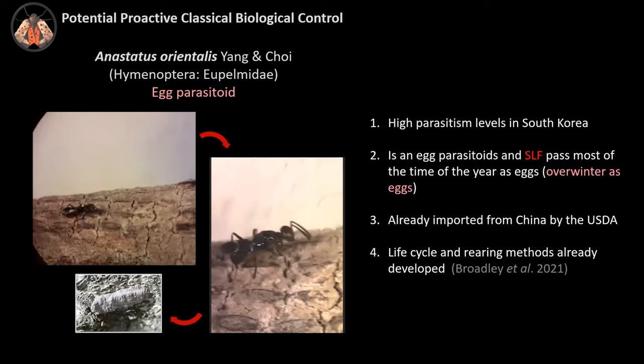A third reason is that this parasitoid was already imported from China by the USDA to test it as a biocontrol agent on the East Coast. This work was developed by Julie Gold and Hannah Broadley, who will have a talk later and will expand on information about biocontrol projects. We honestly piggybacked on all this information that Hannah and Julie worked on in previous years.